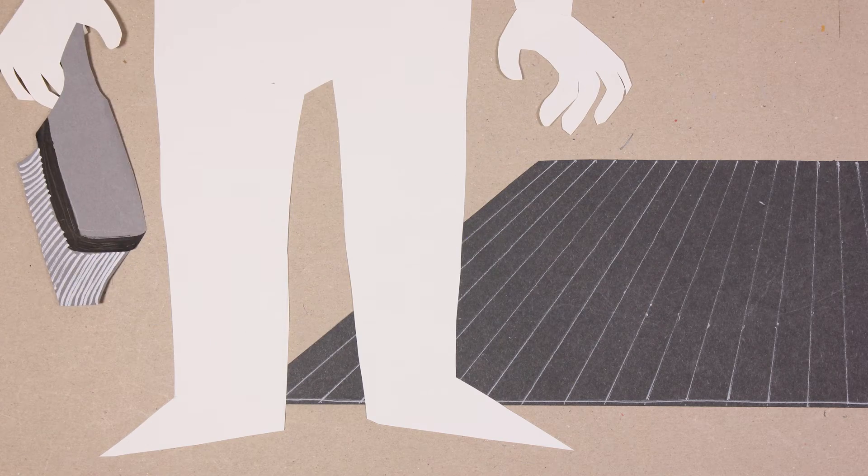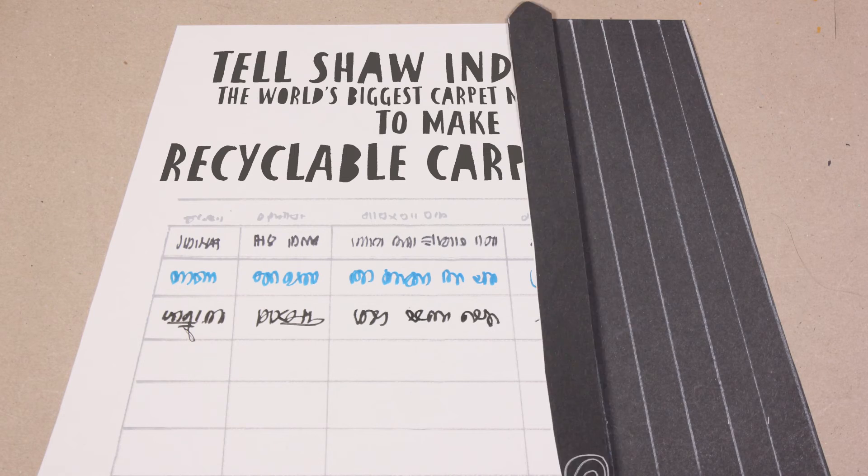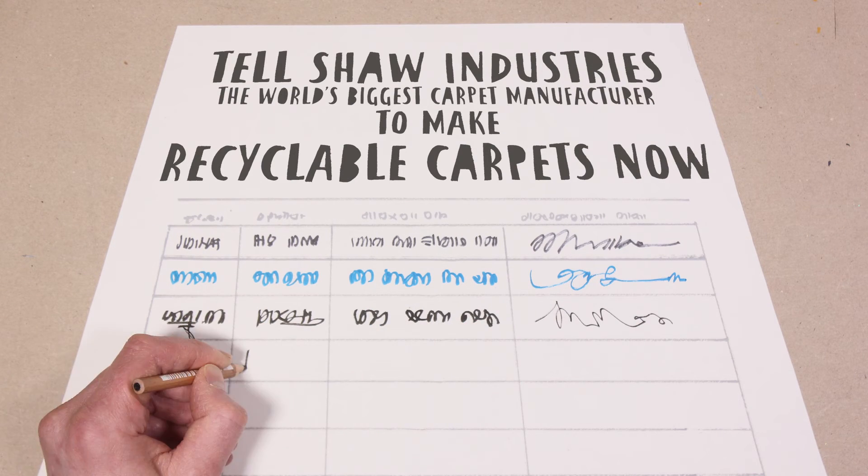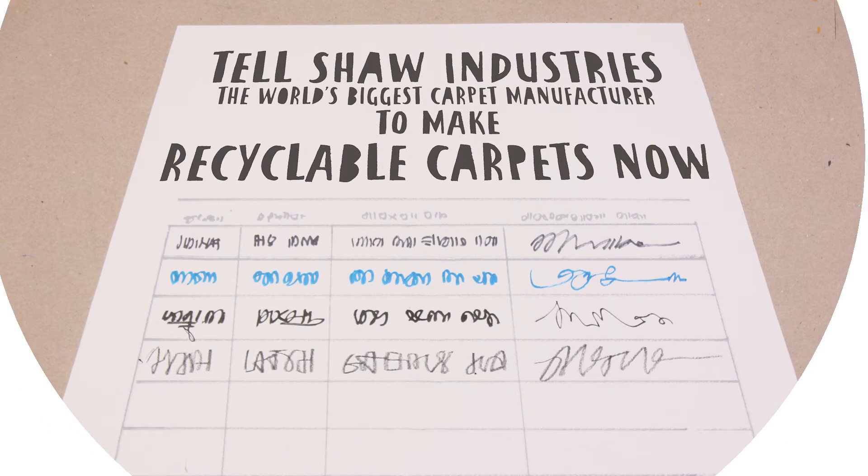We need to tell manufacturers to roll out the new approach now. So sign the petition and tell Shaw Industries to cut the fluff. Make recyclable carpets and ensure they live happily ever after.